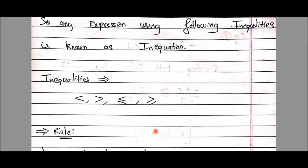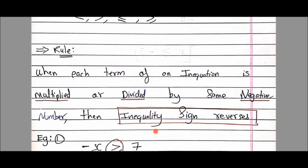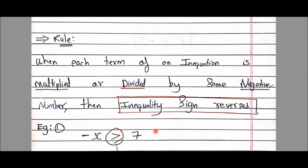This chapter has only one rule, but it is a golden rule. Please pause the video and note it down in your notebook. The rule is: when each term of an inequation is multiplied or divided by the same negative number, then the inequality sign reverses.